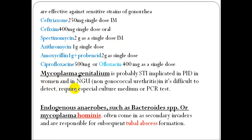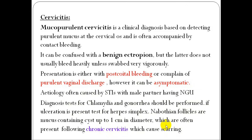Mycoplasma genitalium is another probable sexually transmitted infection implicated in PID and non-gonococcal urethritis in women. It is difficult to detect and requires special culture media for PCR testing. Endogenous anaerobes such as Bacteroides species or Mycoplasma hominis often come in as secondary invaders and are responsible for subsequent tubal abscess formation and tubal collection.